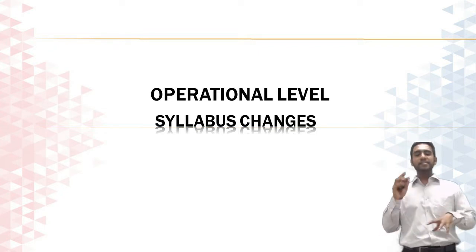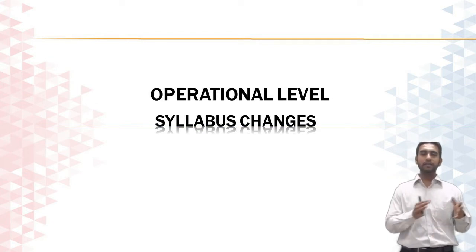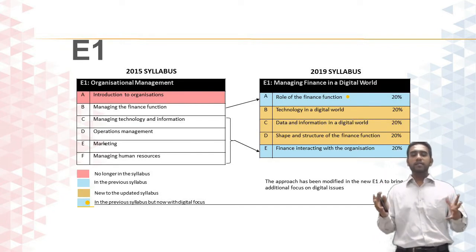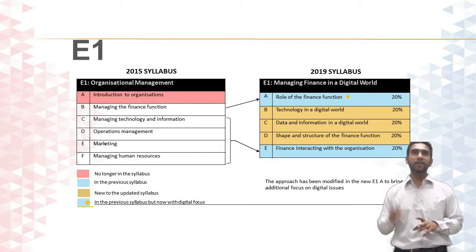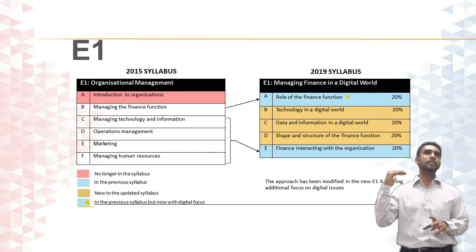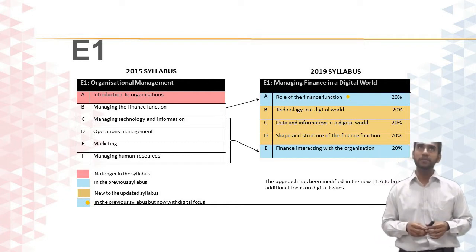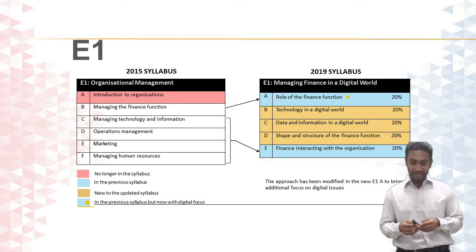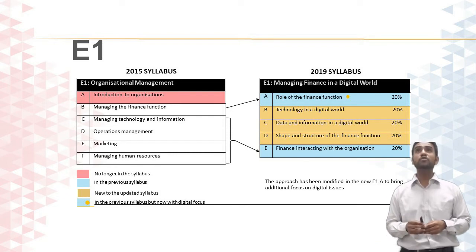We're going to discuss the subject that has faced the biggest change under this new syllabus: E1. There are topics that have completely been moved out. Running through the individual topics from the 2015 syllabus moving into the 2019 syllabus — Topic A, introduction to organizations, has completely been removed and no longer exists in the 2019 syllabus.